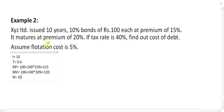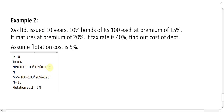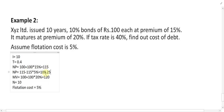Number of years N is equal to 10. Next, flotation cost is equal to 5%. Flotation cost must be subtracted from NP. So the adjusted NP equals 115 minus 5% of 115, which gives NP equals 109.25.